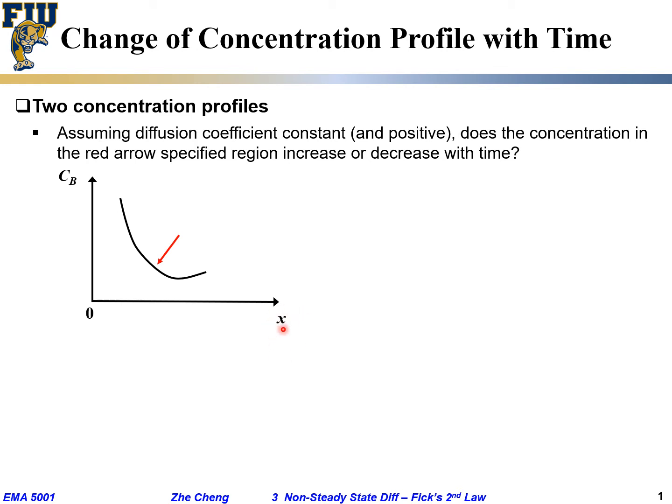We want to ask you, within where my arrow is pointing, does the local concentration increase with time or decrease with time? If we assume the diffusion coefficient is constant, not only constant, we assume it's typically positive. How does this one change?